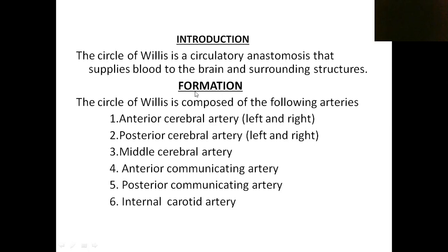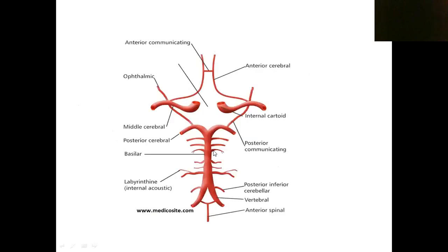Now we will see the formation of the Circle of Willis. In the lower part, we can see two vertebral arteries. These two vertebral arteries join together to form a single artery — the basilar artery — in the upper part of the brain stem.